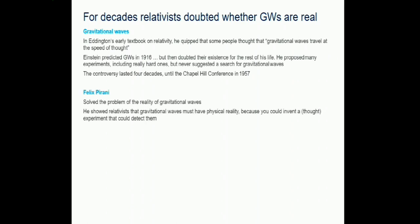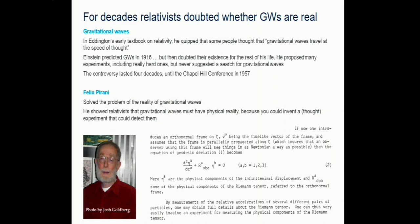The person who solved the controversy is Felix Pirani. At the 1957 Chapel Hill conference, he wrote down the equation for geodesic deviation: two masses on geodesics, and you ask how the second geodesic moves relative to yours. The central object is the Riemann tensor, and he said you can measure these distances and map out the complete Riemann tensor - the curvature. Curvature fluctuations are gravitational waves. Gravitational waves are nothing else than metric fluctuations traveling through space.